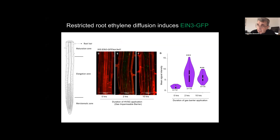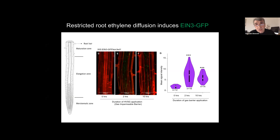We wanted to see if simply covering the root tip with a gas impermeable barrier would be enough to trigger an ethylene response. Using the EIN3-GFP reporter line, within just two hours we saw a large increase in stabilization of the reporter in the elongation zone tissues. This suggested that this ethylene response was nothing to do with mechano-signaling — it appeared to be down to restricted diffusion.